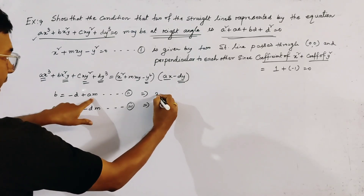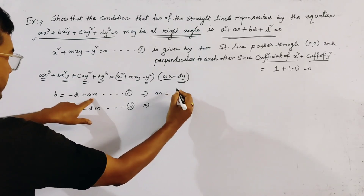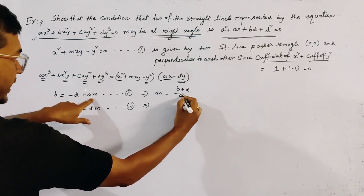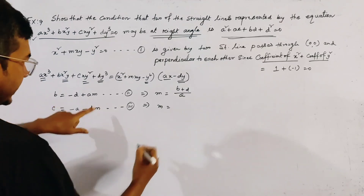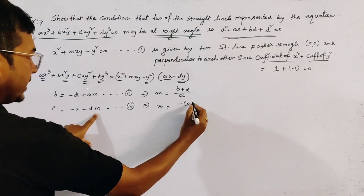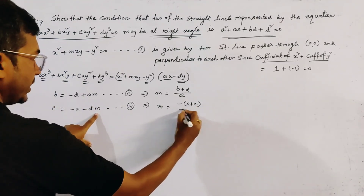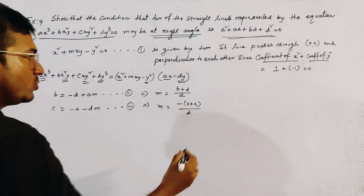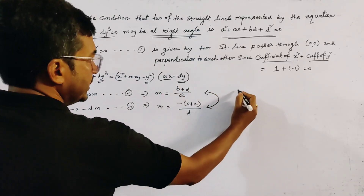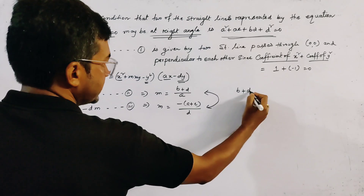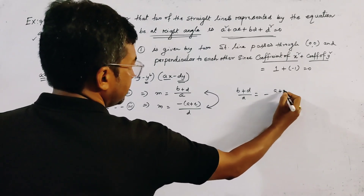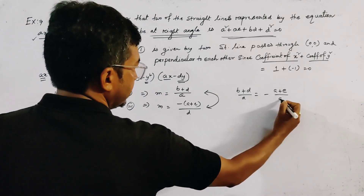From relation 2 we get m = (b + d)/a, and from relation 3 we get m = -(a + c)/d. Now we equate these two values of m: (b + d)/a = -(a + c)/b.